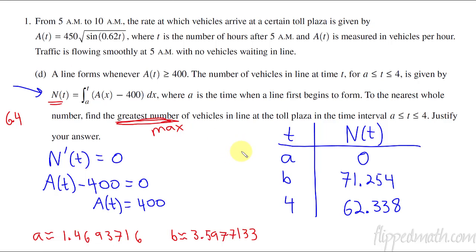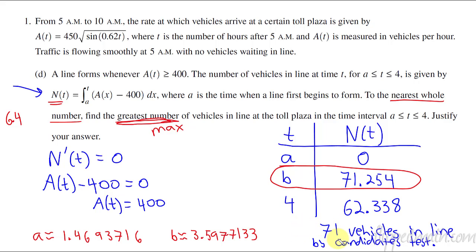All right, so then now I can see what's the greatest number of vehicles in line. It's this line right here. So the greatest number of vehicles is going to be 71.254. You'd probably say it's 71 vehicles. Oh, yes, it does say nearest total number. So 71 vehicles in line. That's the maximum. And I could probably say something like by the candidates test. And where's the candidates test? When did we learn that? Candidates test was in lesson 5.5. So this part D had two separate lessons that we covered from earlier this year.